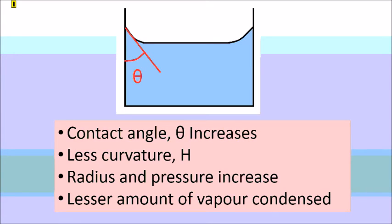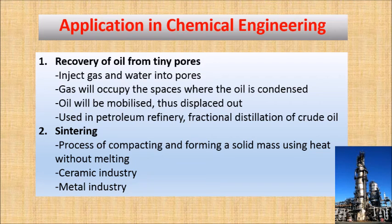For ease of calculation, we usually ignore the contact angle. In chemical engineering, capillary condensation is used in the recovery of oil from tiny pores in the fractional distillation of crude oil. It is also used in sintering of metal industry and ceramic industry.